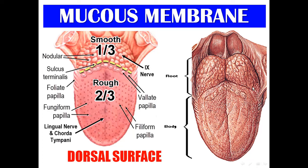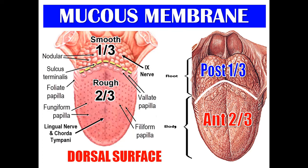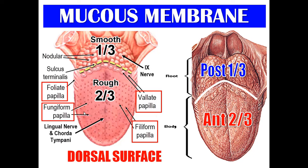Starting with the mucous membrane of the tongue — the dorsal surface. The dorsal surface is divided by the sulcus terminalis into anterior two-thirds and posterior one-third. The anterior two-thirds are rough because they contain lingual papillae. There are four types of lingual papillae: vallate (circumvallate) papillae in front of the sulcus terminalis, filiform papillae, foliate papillae, and fungiform papillae. They contain, of course, taste buds.